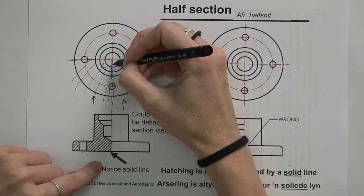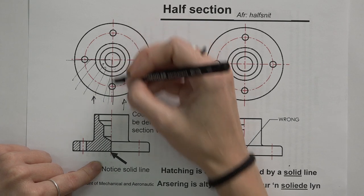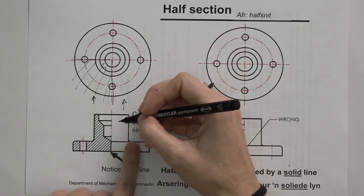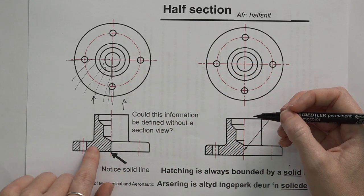But for the rest, I'm cutting into the void, into that empty space, and so I see my center line indicated there to show the dividing line between sectioned and non-section.